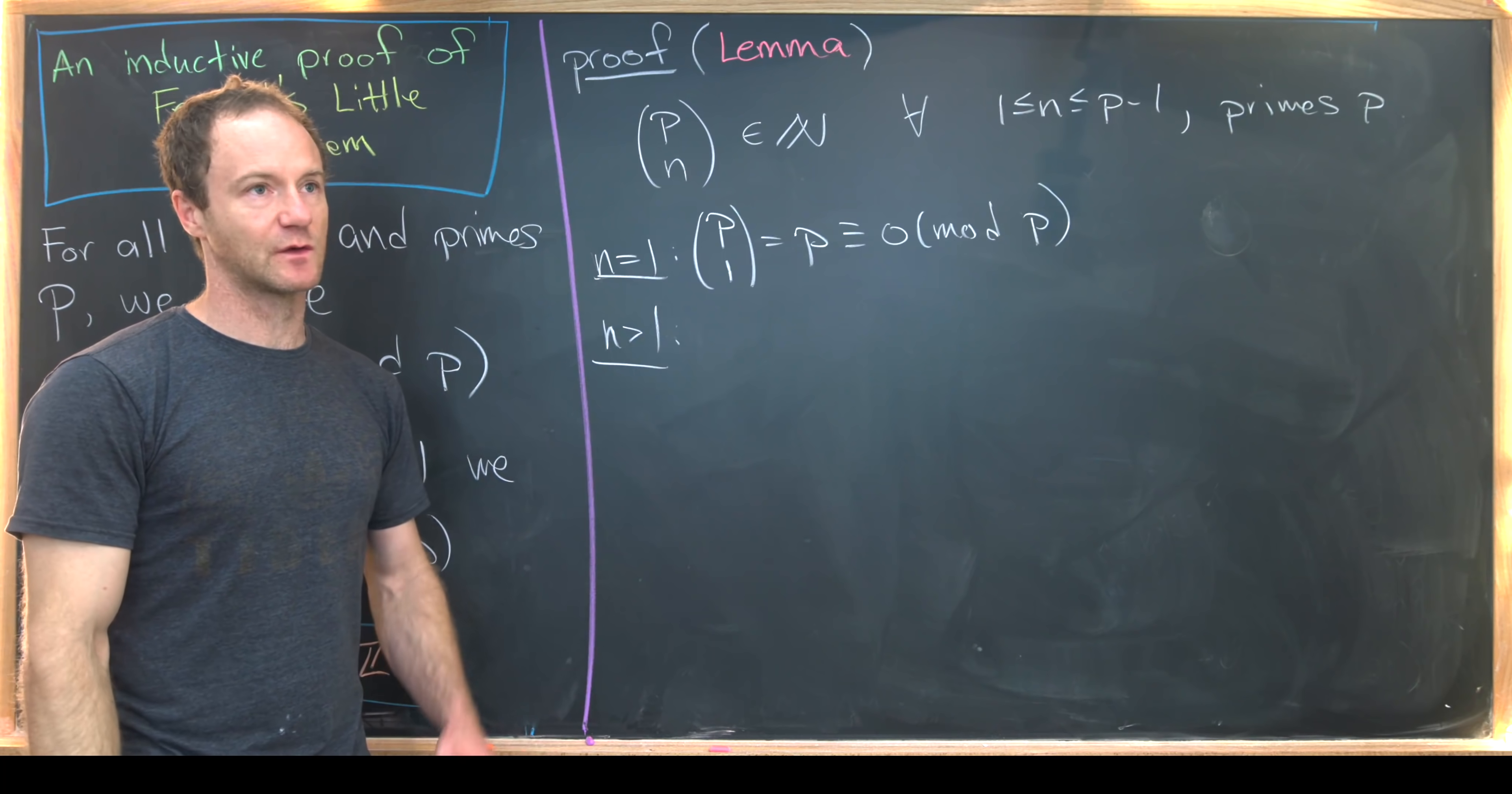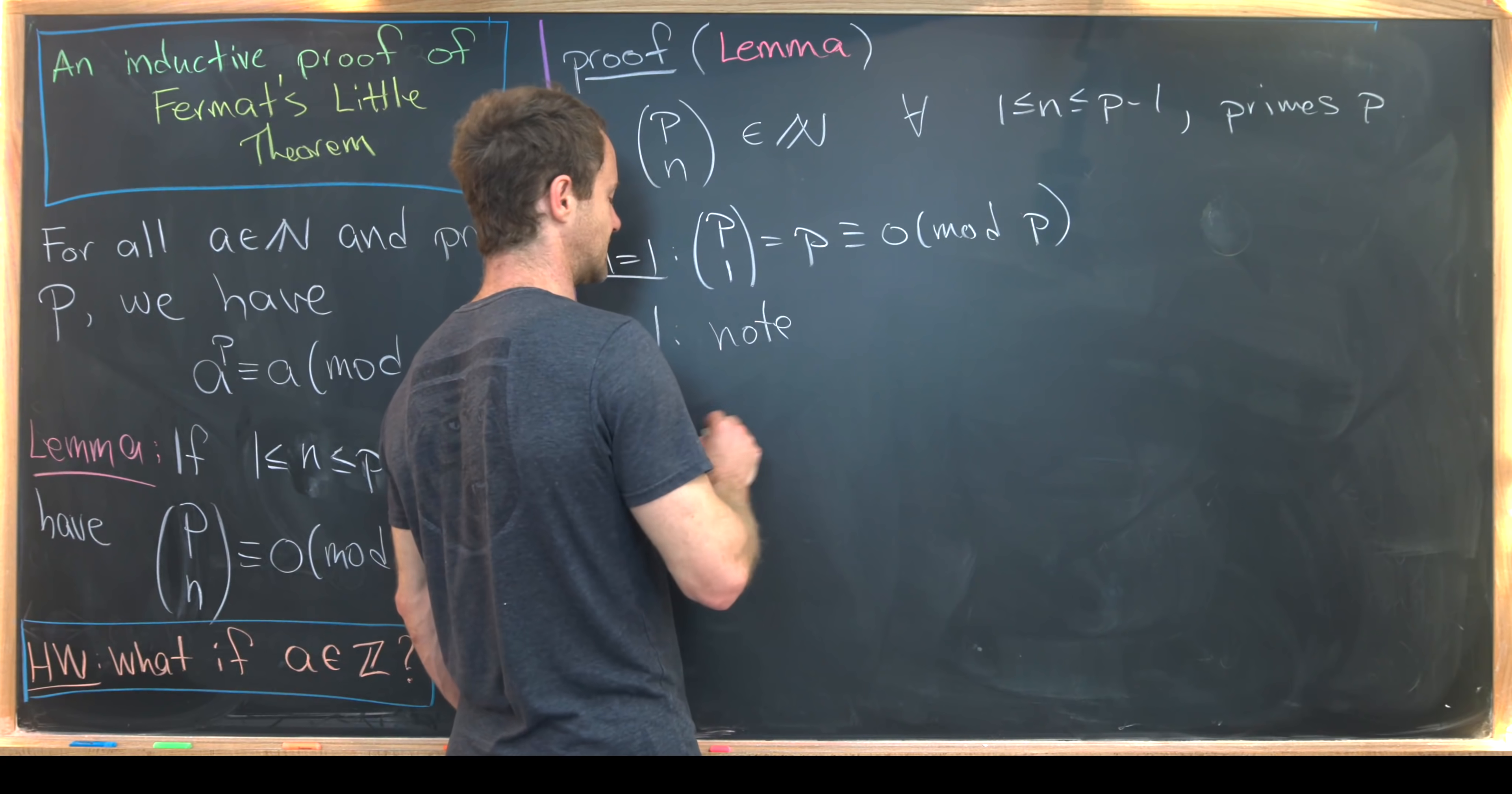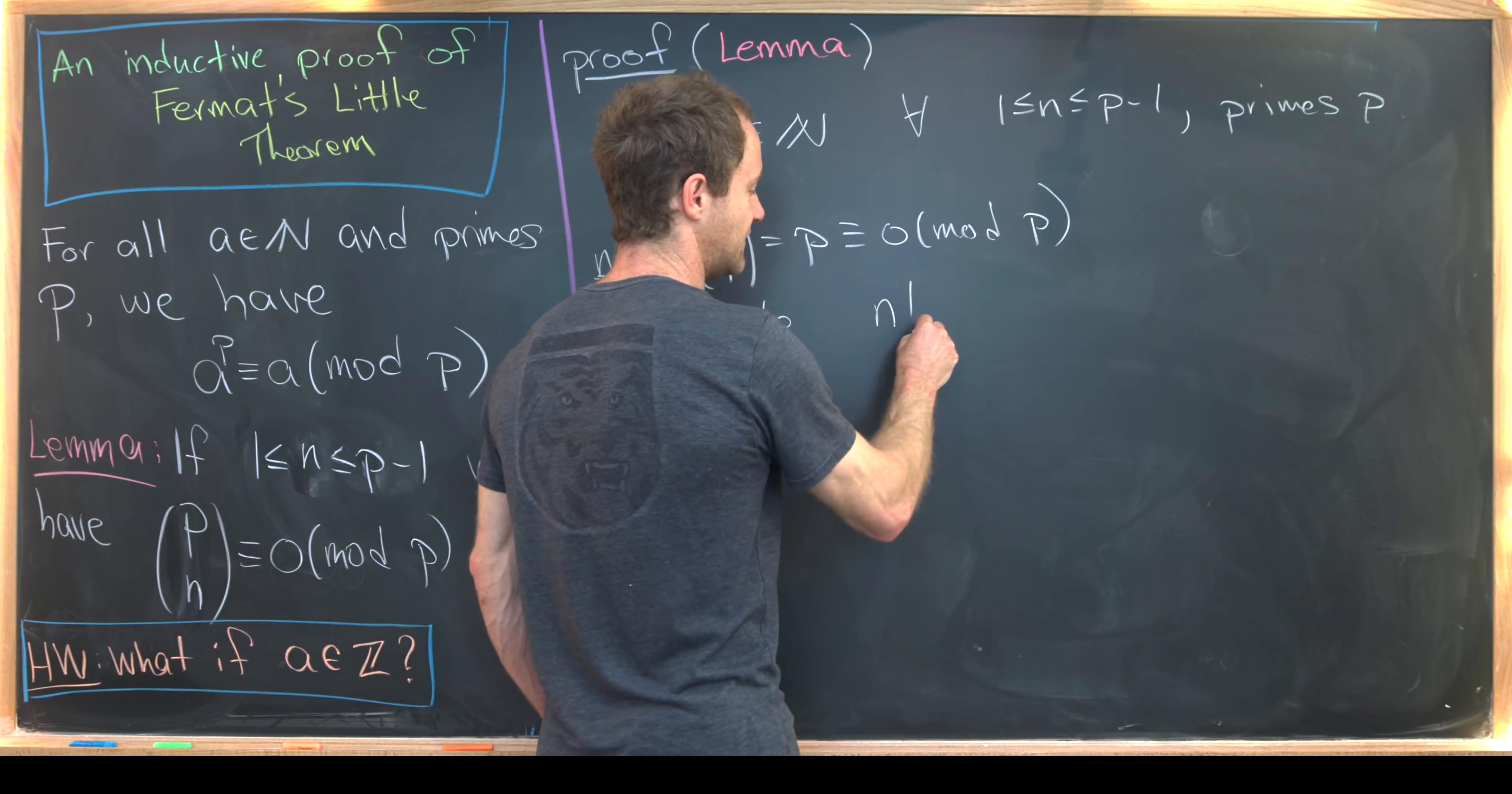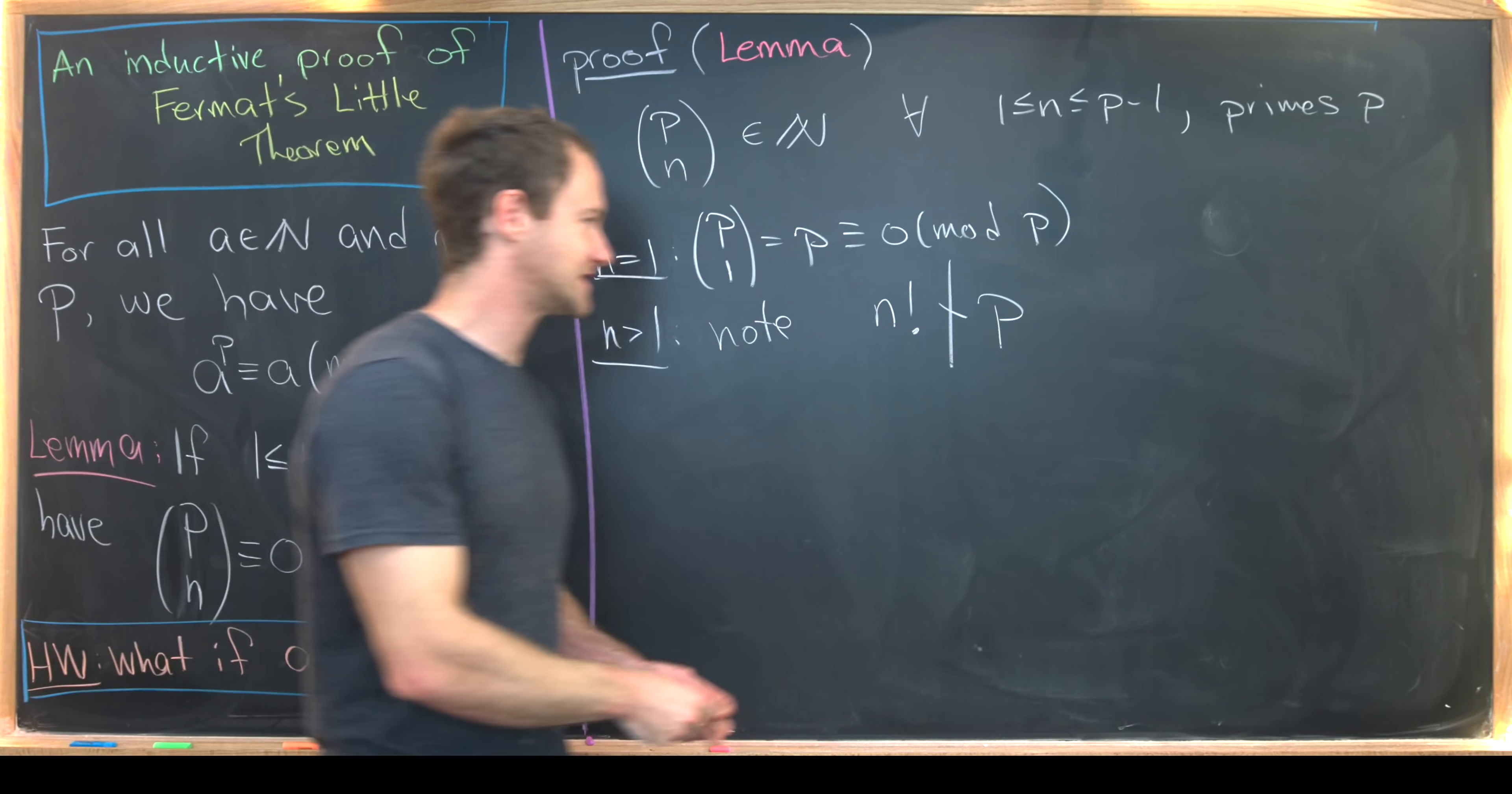Okay, if N is bigger than 1, then N factorial is also bigger than 1, and we can make the following fairly simple observation that N factorial does not divide P. Well, why is that?